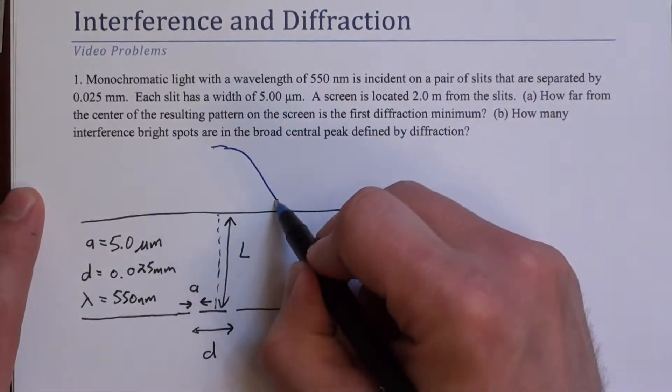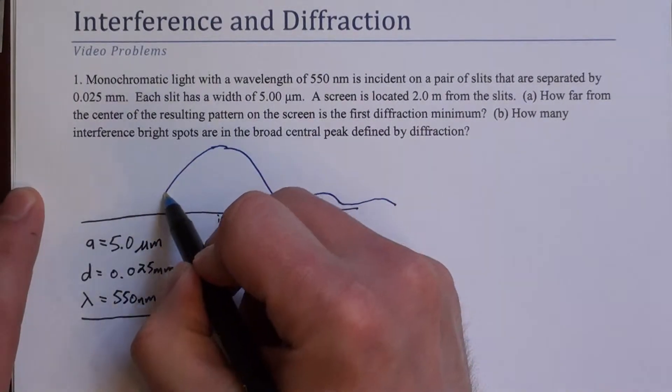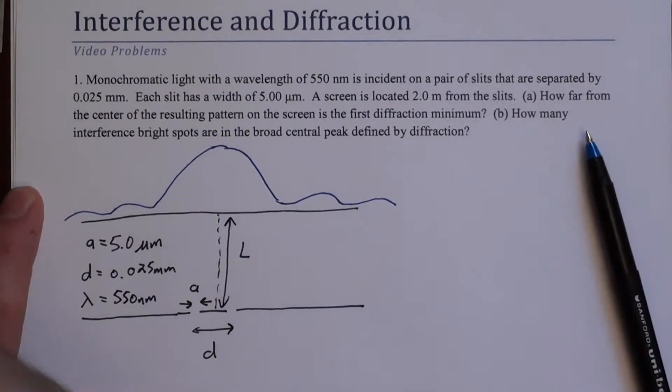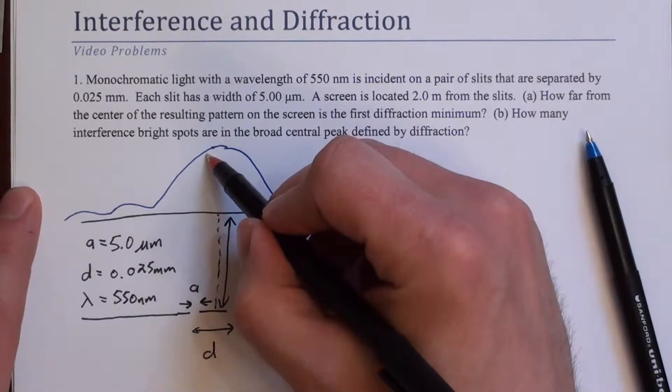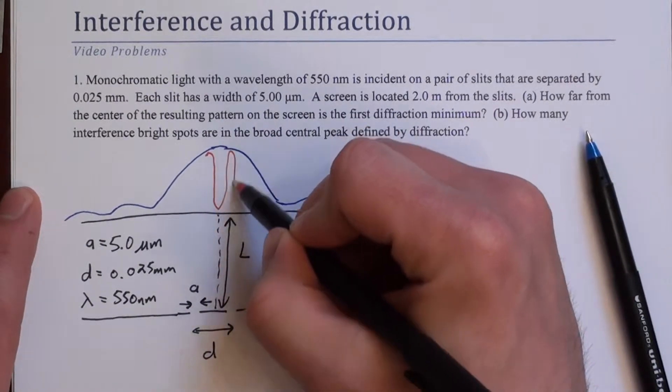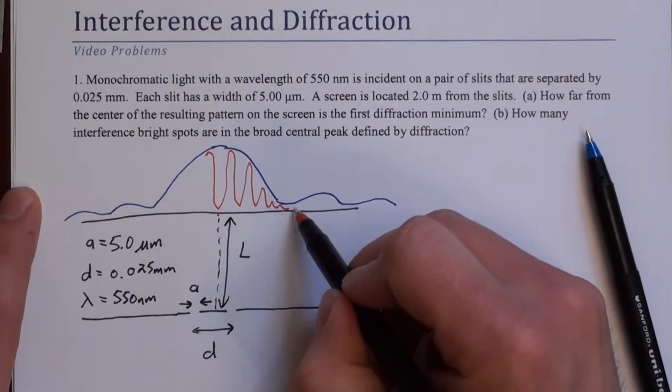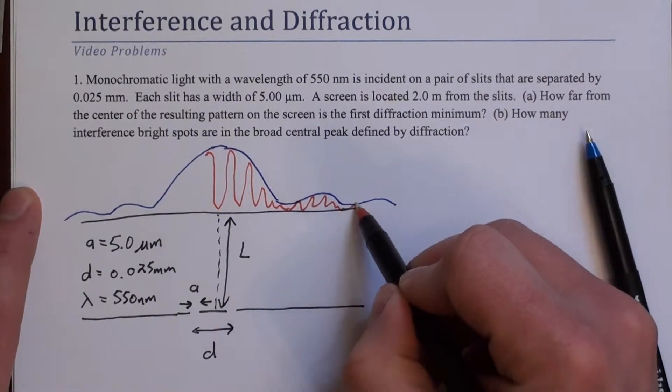So we have this diffraction envelope that looks something like this. And inside of that diffraction, what we actually see is interference. So we see tightly spaced interference that gets less intense with diffraction, and more intense, and then less intense, but it's all equally spaced here.